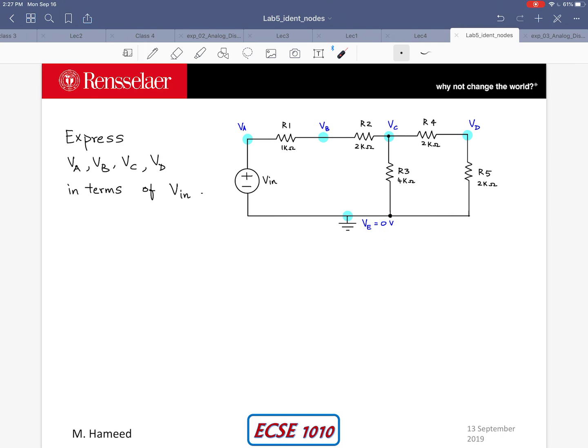So my goal in this video is to be able to express voltages at nodes A, B, C and D in terms of my input voltage Vin. To start this example I will start very simple and I will focus on this part of the circuit, the very end.